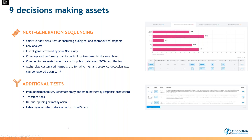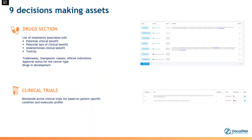Another very important section in OncoDNA KDM is additional tests. Since NGS data alone is not sufficient for an accurate and complete report, we give the pathologist or molecular biologist the ability to add any other additional tests — such as immunohistochemistry, translocation, or any IHC tests like PDL1 positivity or CD8 positivity — and we provide interpretation for them. These results are taken into account when generating the comprehensive summary, which includes the interpretation of both NGS data and the additional tests that are important for chemotherapy and immunotherapy decisions.